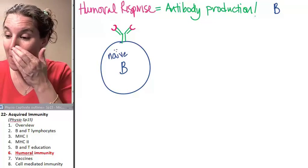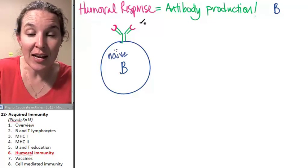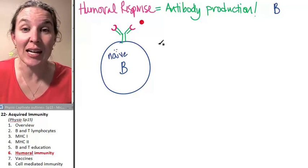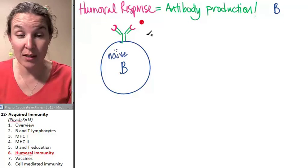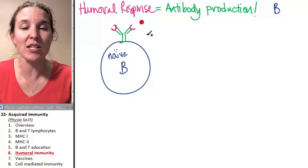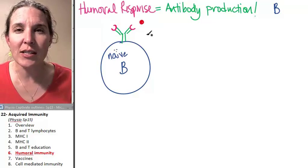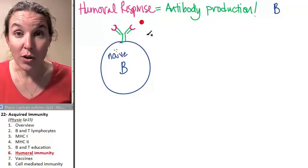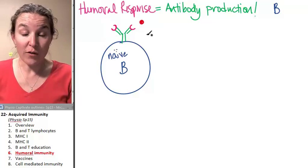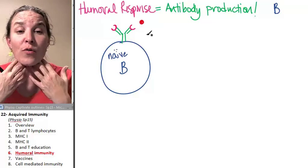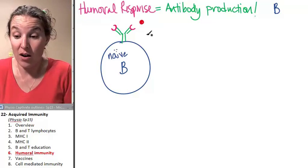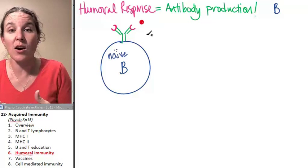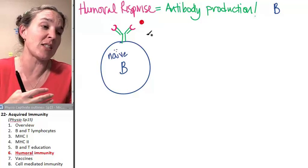This little B is just hanging out. At this stage in the game, it's considered a naive B cell — N-A-I-V-E. It has had no experience at all. It's going around looking for its antigen. It hangs out in lymph nodes because all the fluid in your body goes through your lymph nodes, so the lymphocytes go there to see if they need to be activated.